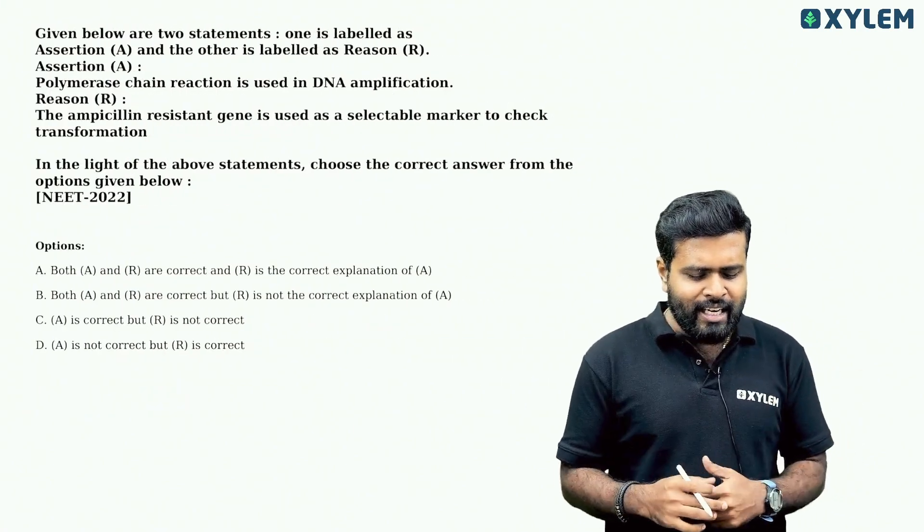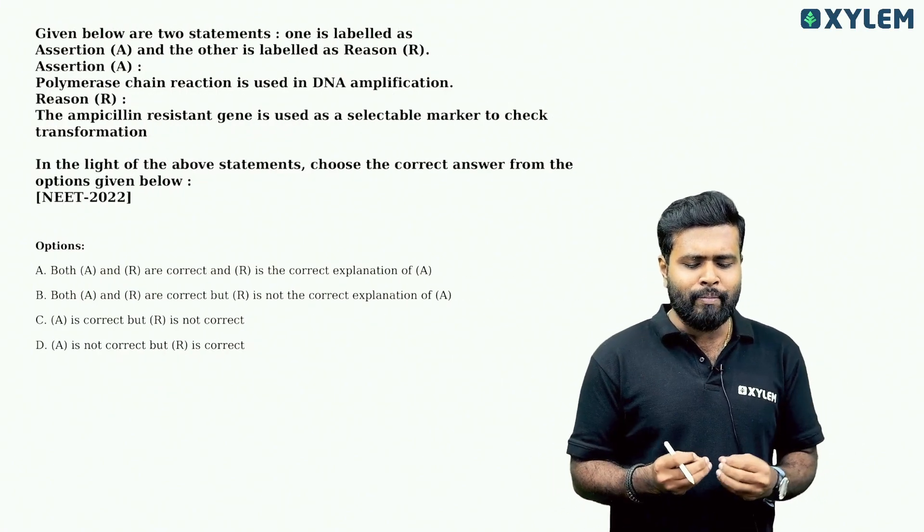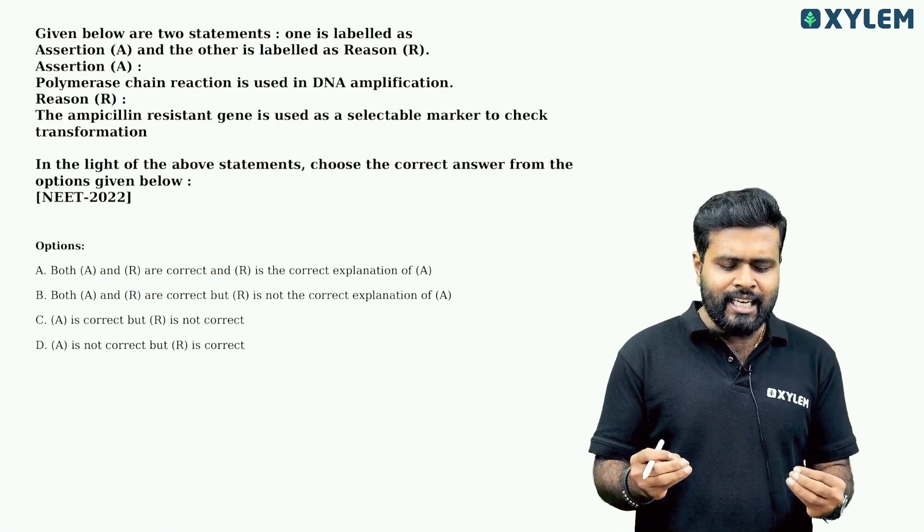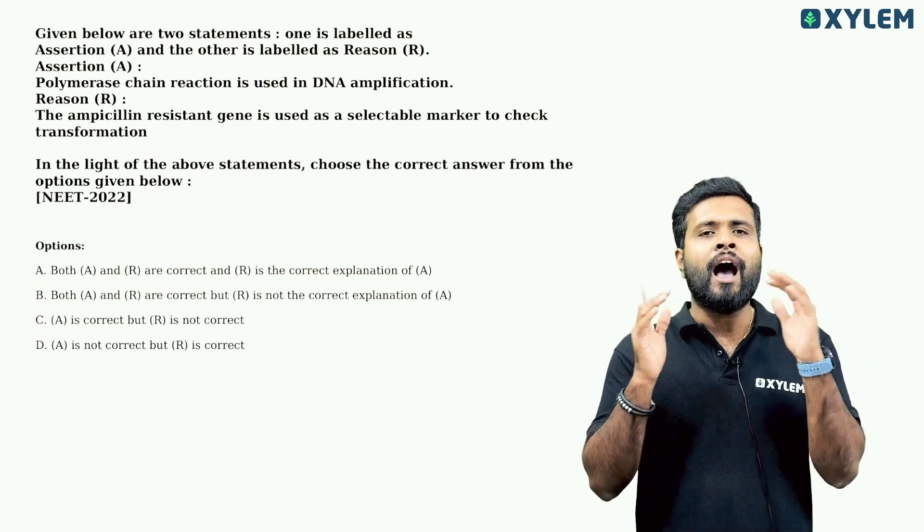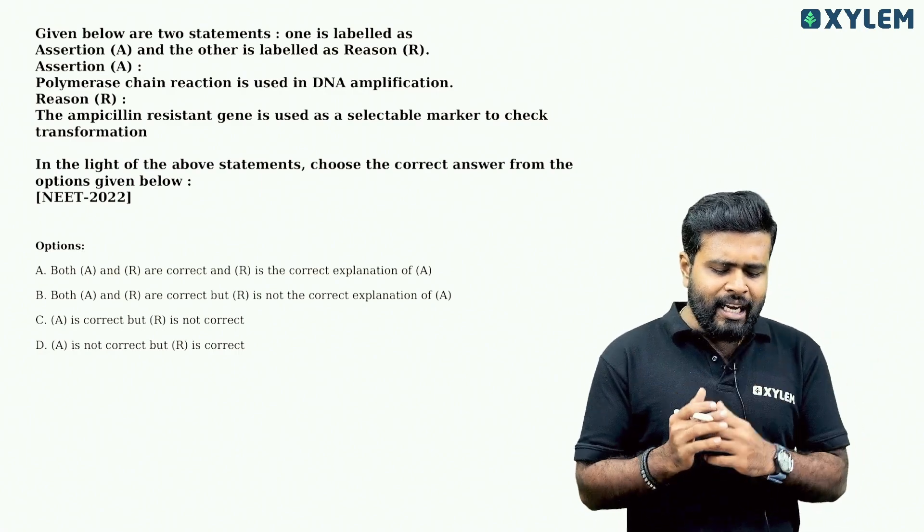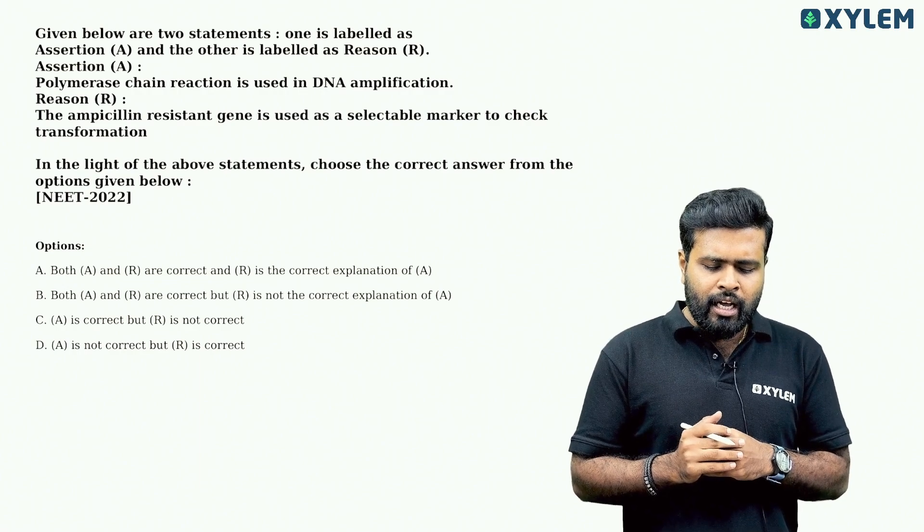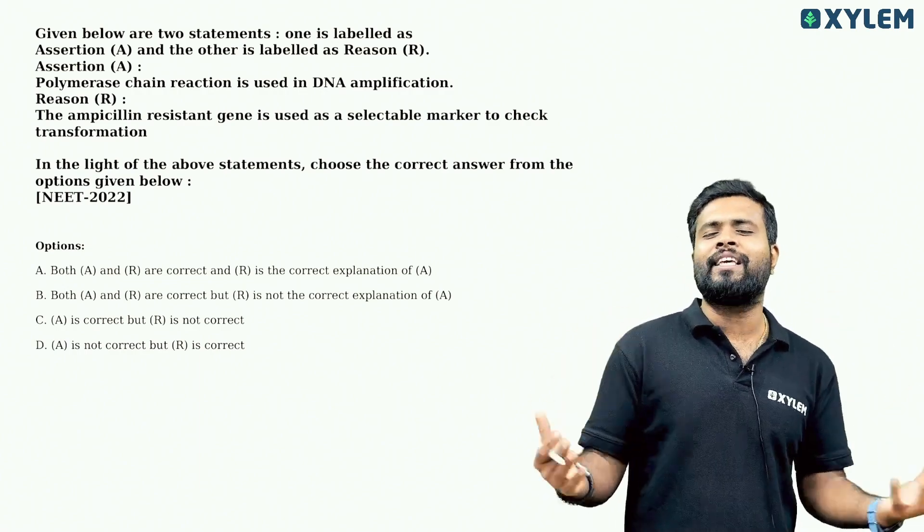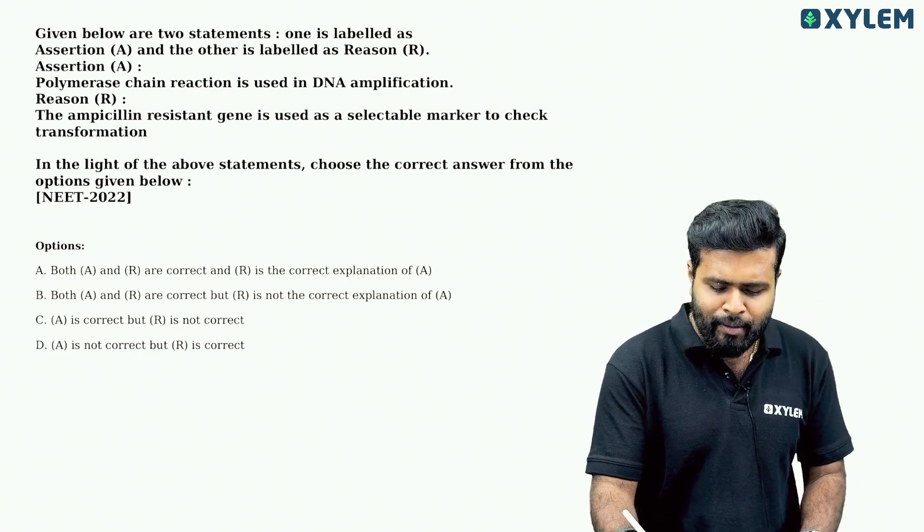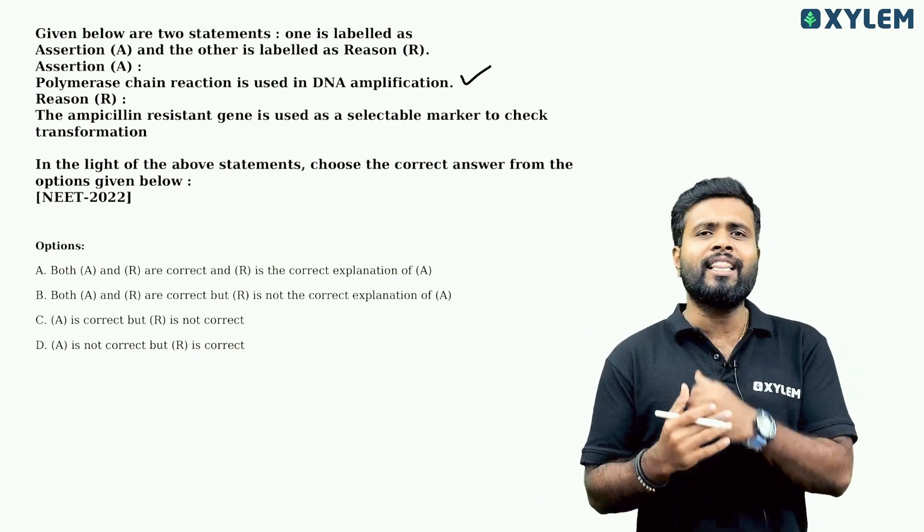The next question. Given below are two statements, one is labeled as assertion and other as reason. Assertion: polymerase chain reaction is used in DNA amplification. Yes, DNA copying, we have PCR. The statement is correct. The reason is correct.